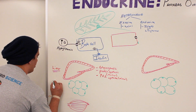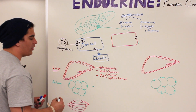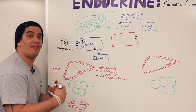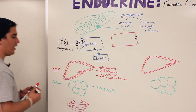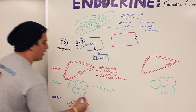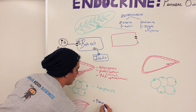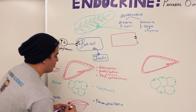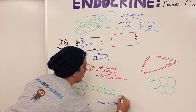Insulin also acts on adipose tissue. In the adipose, it inhibits hormone-sensitive lipase and uses glucose as a carbon skeleton for fatty acids and glycerol to make triglycerides — stimulating lipogenesis. It also increases glucose uptake into adipose tissue via GLUT4 transporters.